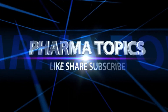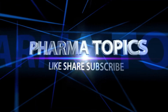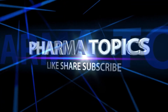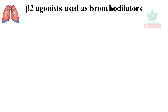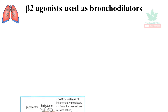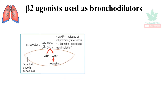Welcome to our Pharma Topics channel. Our topic of discussion is beta-2 agonists used as bronchodilators. The beta-2 agonists work through the beta receptors, which are G protein-coupled receptors. They increase the cyclic AMP.